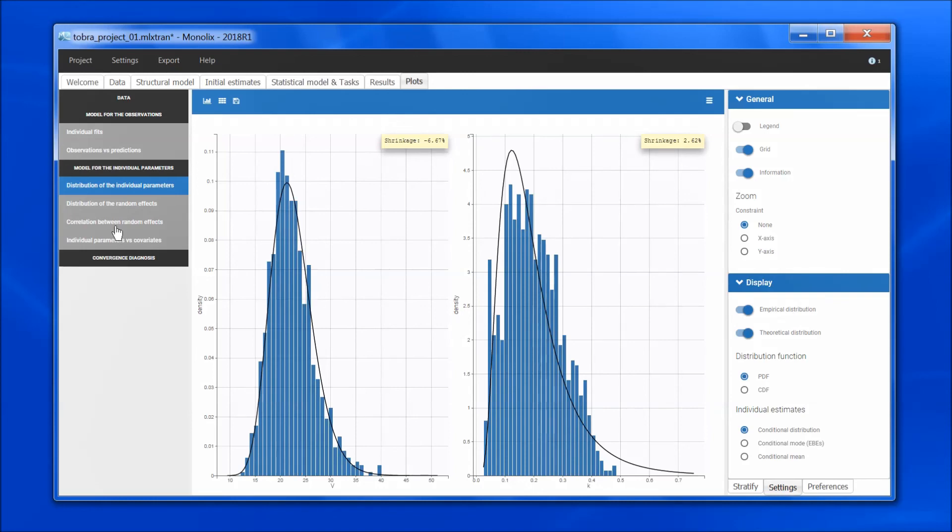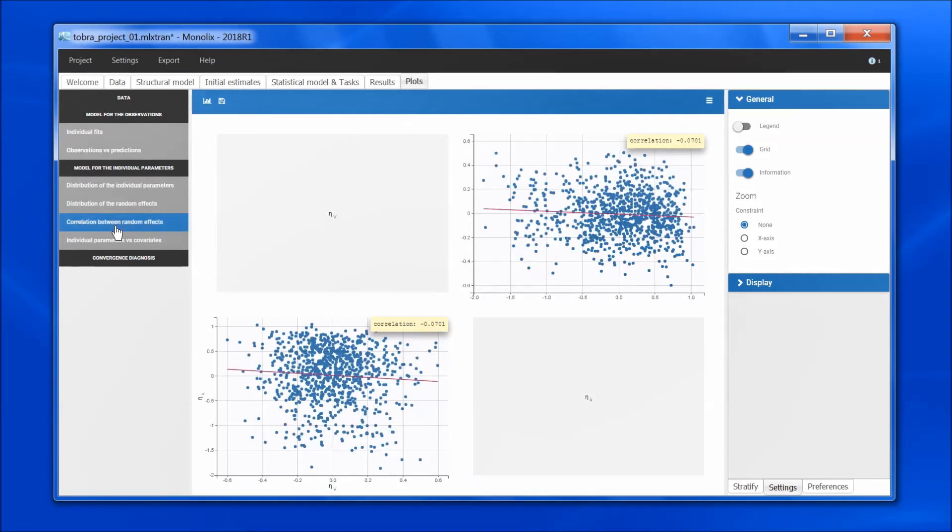If we come back to the correlation between random effects, we have more points because we have several samples per individual, and we do not see any clear tendency anymore. So the previous plot using the EBEs was wrongly indicating a positive correlation, and this is not the case anymore when using the samples from the conditional distribution.